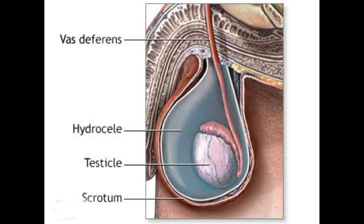One of the fetal anomalies is hydrocele in one or both testicles. From the diagram you can understand the hydrocele. This is the collection of fluid around the testicle, and it is present within the tunica vaginalis, which is one of the layers of the scrotal skin.